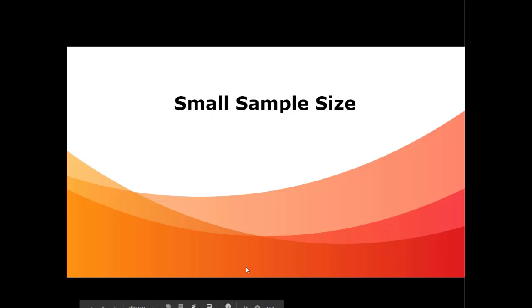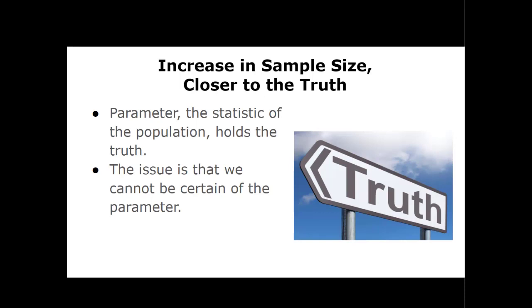The first situation that can introduce error is a small sample size. The big idea is that as your sample size increases, the closer you are to the truth. Remember, we're trying to get to the population parameter — that's where the truth is held. The issue is we can never really be certain of the parameter unless we're actually able to deal with everybody in that population.